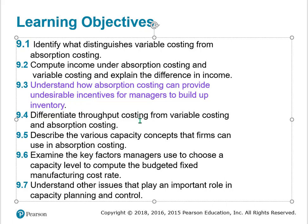We'll distinguish throughput costing from variable and absorption costing. And then finally, we'll look at capacity — various capacity concepts that firms can use in absorption costing, and the key factors that managers use to compute the budgeted fixed manufacturing cost rate. These cost rates are difficult and fixed costs are high, and we'll understand other issues that play an important role in capacity planning and control.